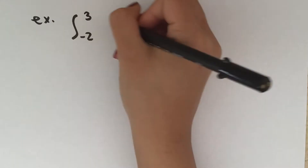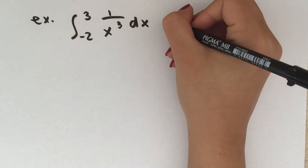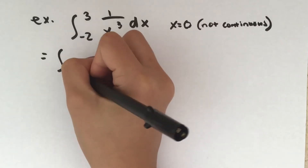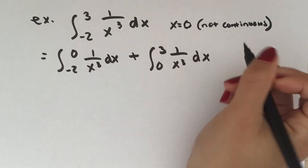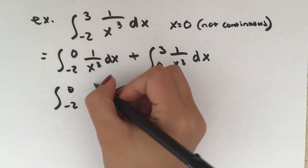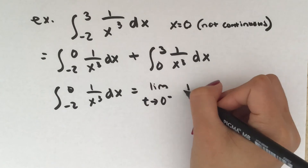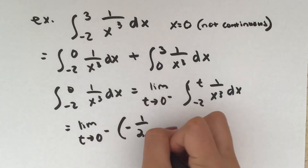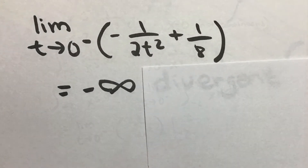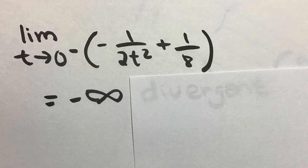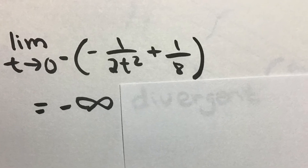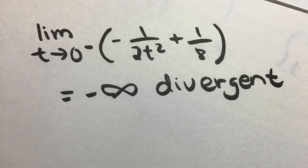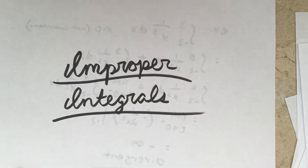For our last example, we take the integral from negative 2 to 3 of 1 over x cubed dx. The integrand is not continuous at x = 0, so we split the integral there: the integral from negative 2 to 0 plus the integral from 0 to 3 of 1 over x cubed dx. Solving the first integral, we take the left-hand limit as t approaches 0 from negative 2 to t, and after plugging in we get negative 1 over 2t² plus 1/8. As t approaches 0 from the left, this gives negative infinity, meaning that integral is divergent — and therefore the original integral is also divergent. And that's an overview on improper integrals. Thank you for watching!